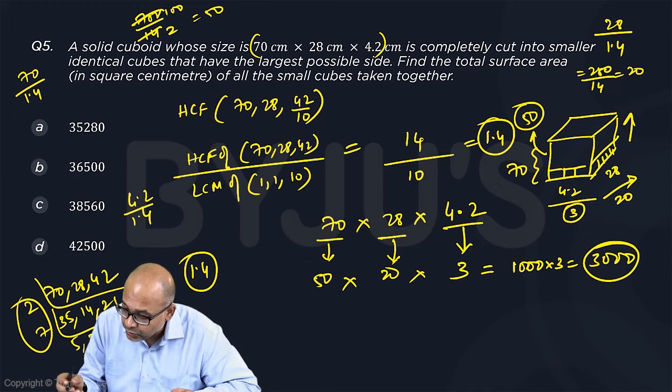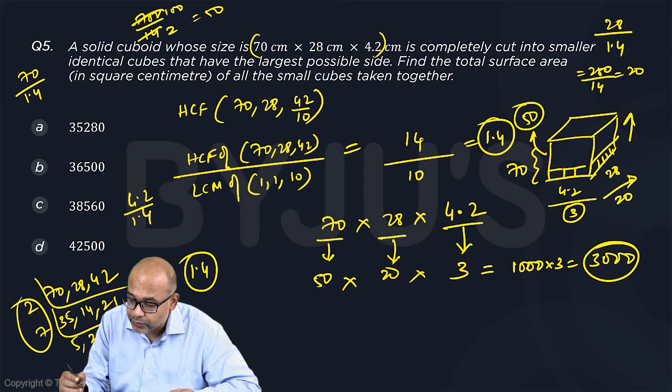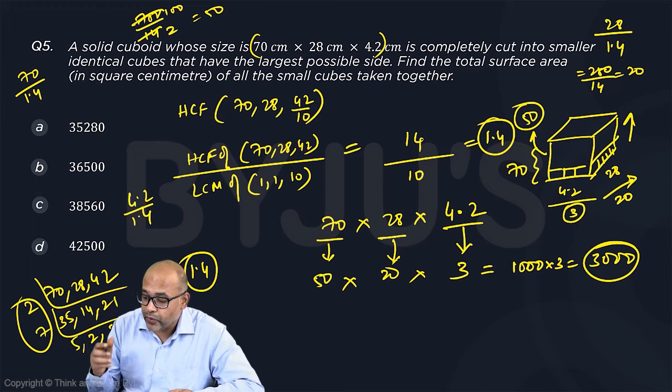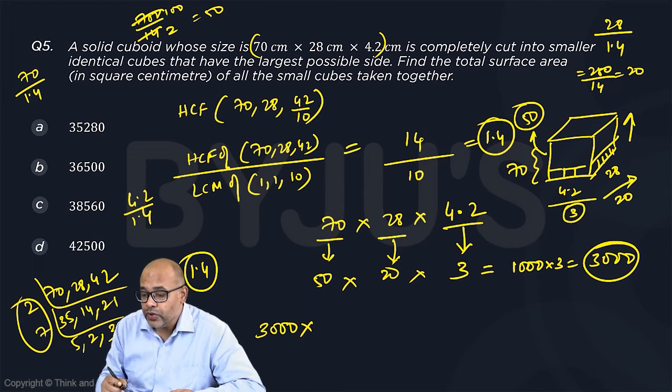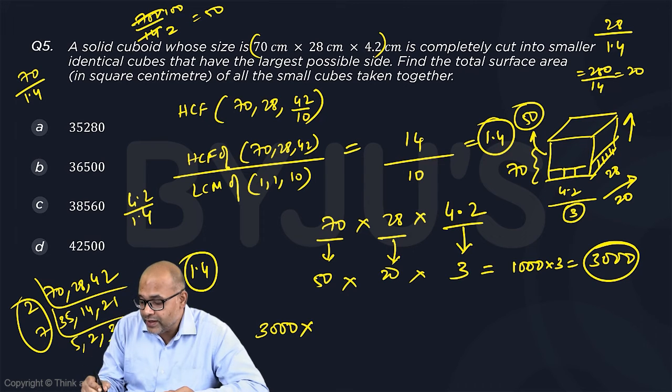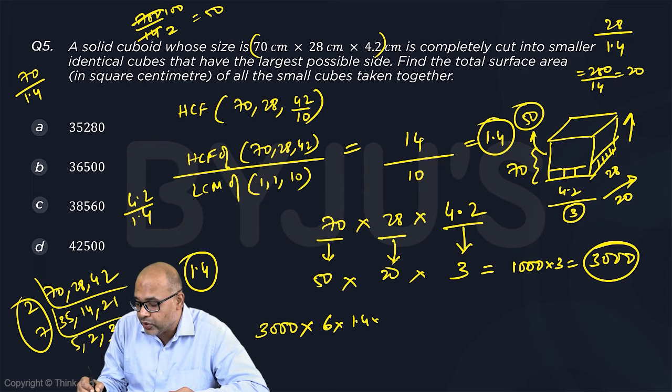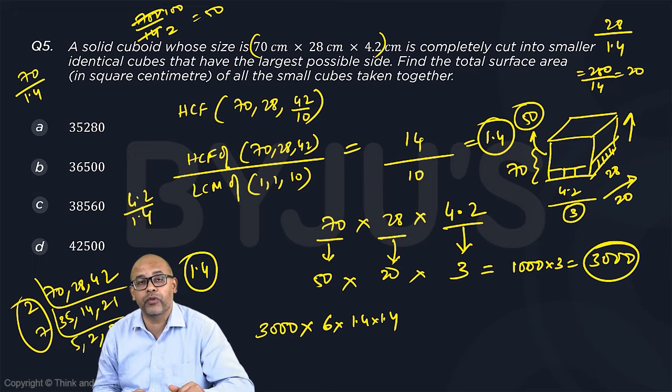Now the question is, find the total surface area of all the small cubes taken together. Now 3000 cubes into surface area for each cube is 6 into 1.4 into 1.4 because each side is 1.4 square.